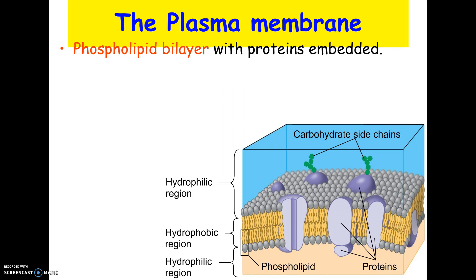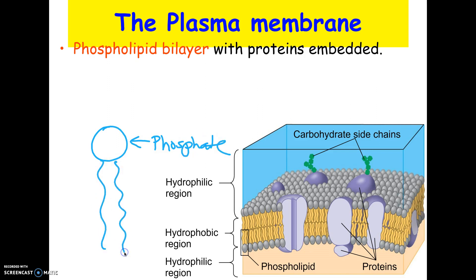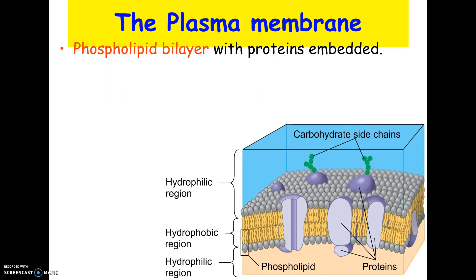You should know what a phospholipid is from our biochemistry chapter. It has a phosphate group and two fatty acids, which are unsaturated so they're drawn with kinks in them, connected to a glycerol. When we shorten it up, it looks like a ball with two wavy sticks. That is the phospholipid, and when arranged in a bilayer it has proteins in it — those purple things in the picture are the proteins.